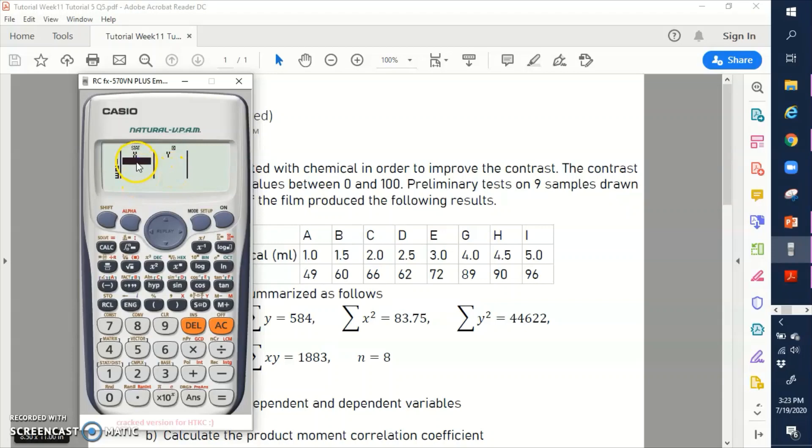So I'm going to start input the first data first. 1.0 equal 1.5 equal 2.0 equal 2.5 equal. So this is going to take a while so bear with me. So now we have 9 data for x. Is it 9? 1, 2, 3, 4, 5, 6, 7, 8.